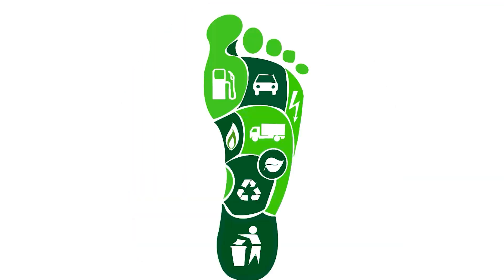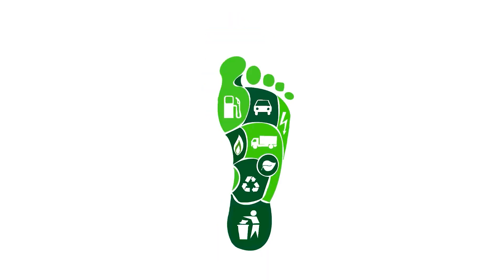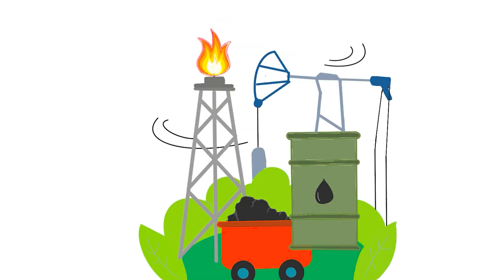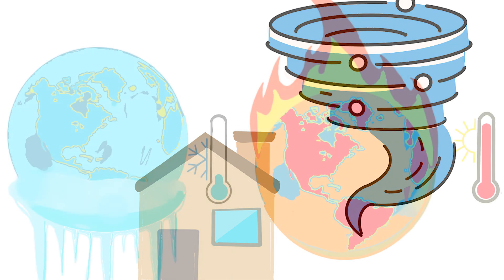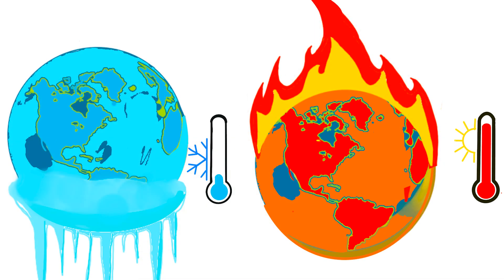Reducing our carbon footprint helps keep the climate at a healthy level. By minimizing human-made sources of greenhouse gases, we can avoid natural disasters and extreme temperatures, which can be harmful to people and the environment.